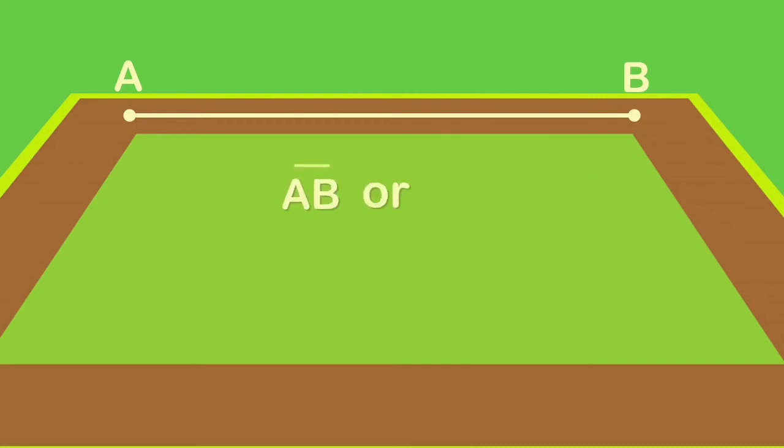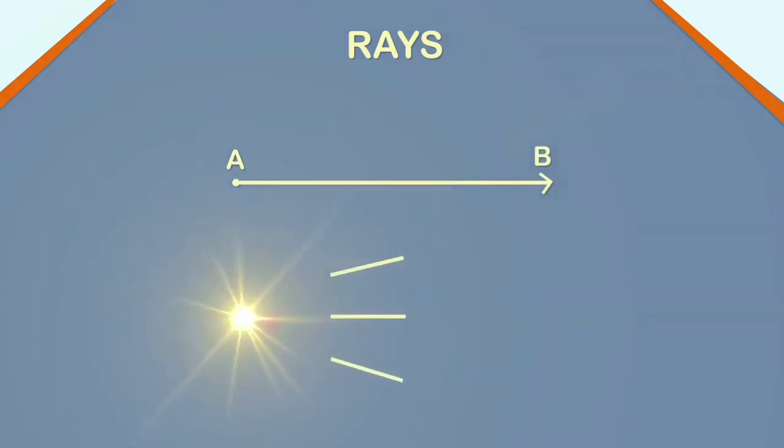A line segment which extends endlessly in one direction is called a ray. Have you noticed the rays of the sun? They start from the light source, which is the sun, and go on endlessly in one direction.